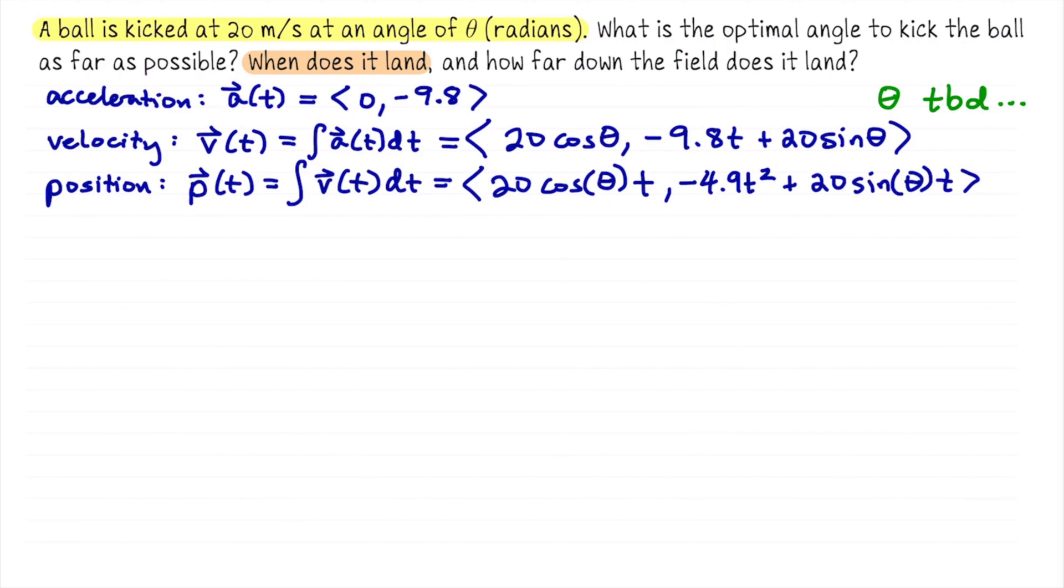Okay, when does the ball land is asking for what time values is the height or the y component of this position vector 0. So when is y(t) 0? All right, so I'm going to say let's set 0 equal to negative 4.9t squared plus 20 sine of the unknown angle theta times t and then plus 0.